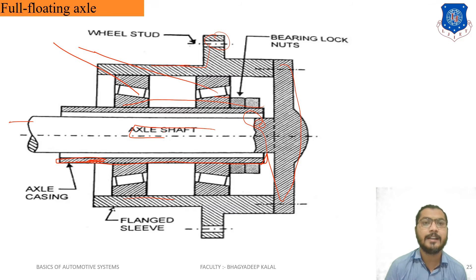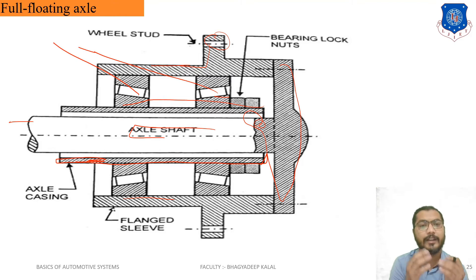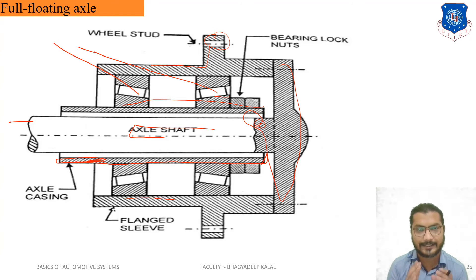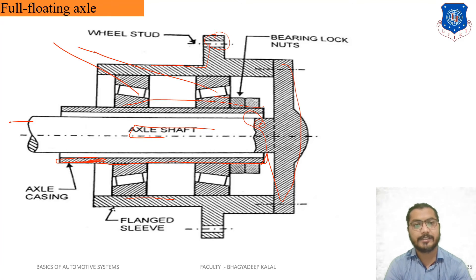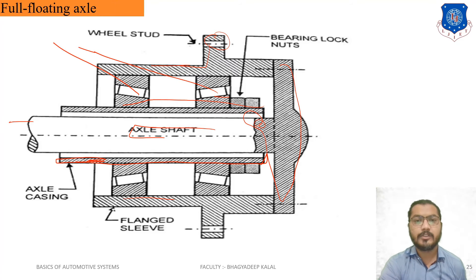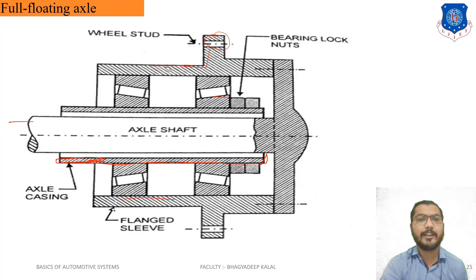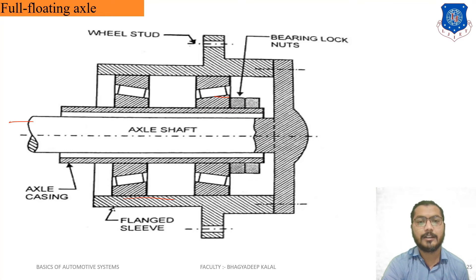In full-floating axles, the axle casing is hollow and contains the axle shaft. Because two tapered bearings are provided on the axle casing, not all four types of loads come directly on the axle shaft. Only driving torque is borne by the axle shaft; other loads such as torque reactions are borne by the axle casing.